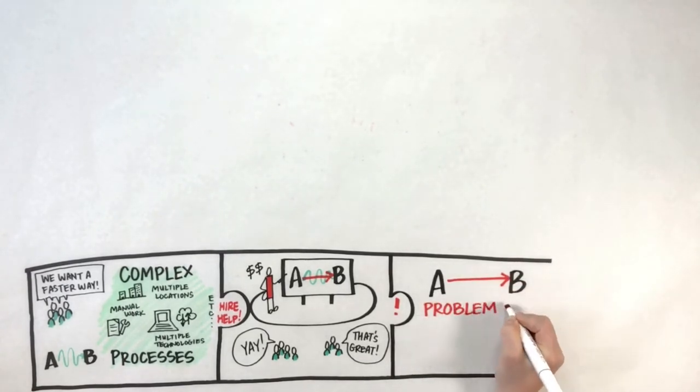Because after their new A to B process is complete, a lot of companies will find that their shiny new process is still taking too long and costing too much. Sure, it's removed some inefficiencies, but now they're running into new hurdles like missed requirements or changing business needs.